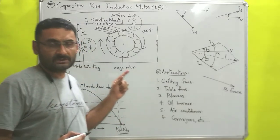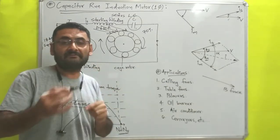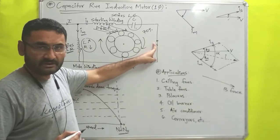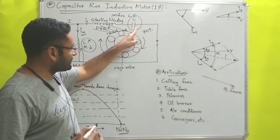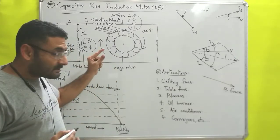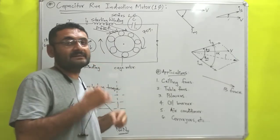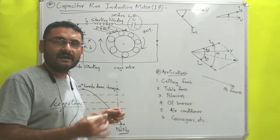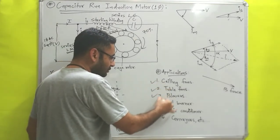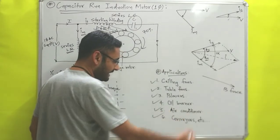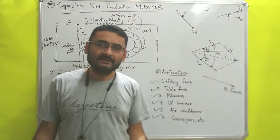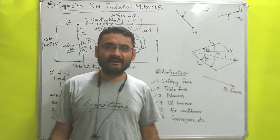This type of motor is used for heavy duty purposes because no centrifugal switch is used, so the motor keeps continuous rotation with the help of the capacitor, and its power factor is high. They are used in ceiling fans, stable fans, blowers, oil burners, air conditioners, and conveyors. That is all for this video — till then, read hard, work hard, thank you very much.